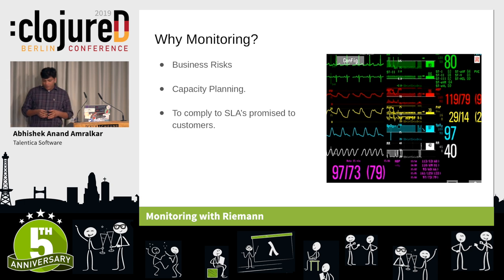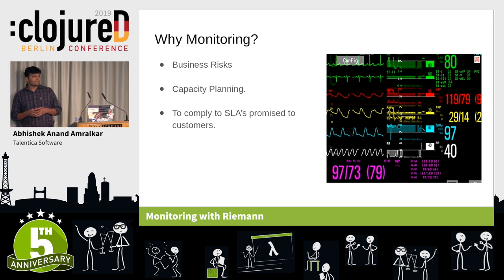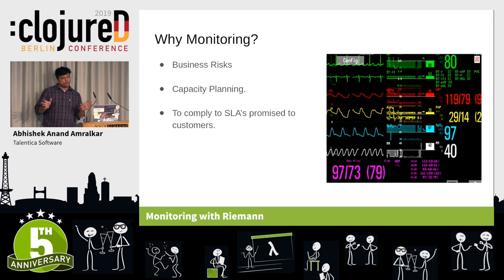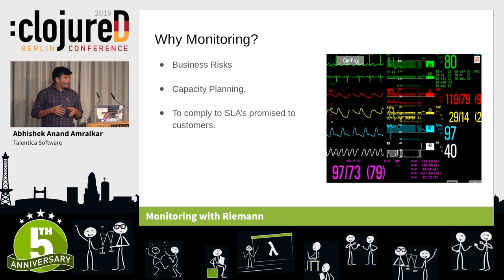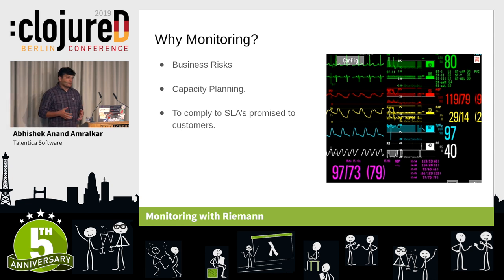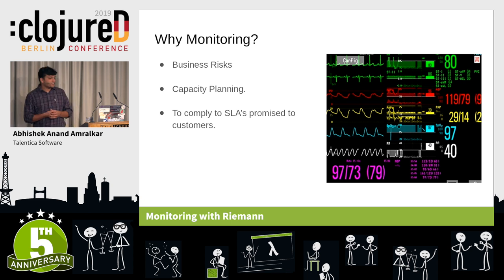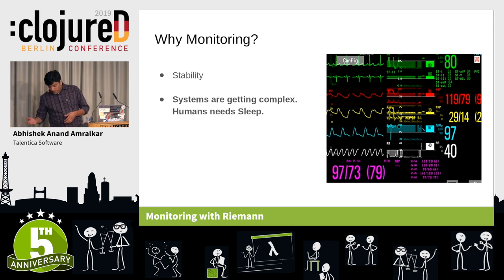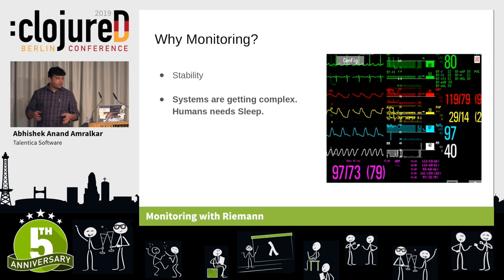First, why do we need monitoring in place? There are a few important points. First is business risk, then capacity planning, to comply with SLAs promised to customers — I mean the sales team promised some SLAs and we need to comply. Apart from that, it's stability.